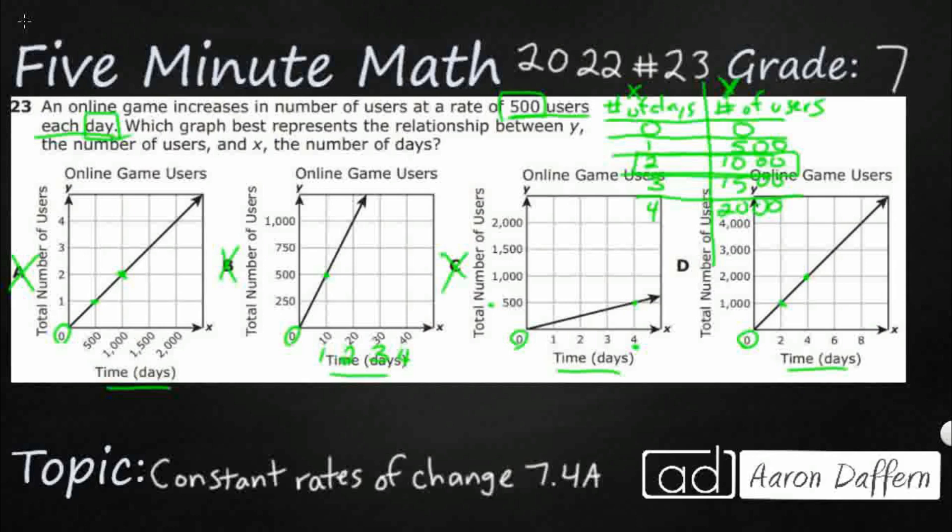So it looks like every two days, I've got 1,000. I've got 2,000. So if I were to skip down here to six days, I'd just add another thousand. That'd be 3,000. Six days, 3,000. Yep. That is going to be our answer, D.